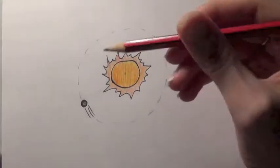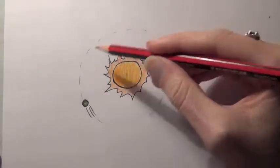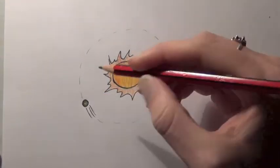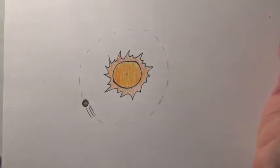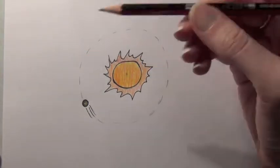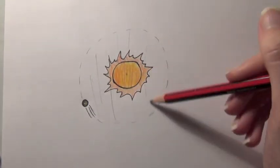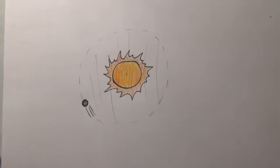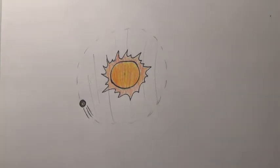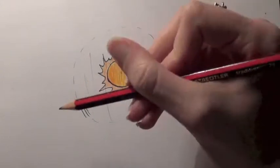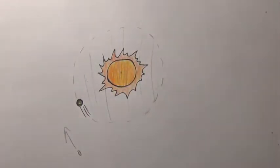The speed of an orbiting object is caused by the gravity pulling on it. Gravity is stronger when there is more mass, so the more mass there is in here, the faster this object will go. Distance also affects the strength of gravity, so an object out here will go slower because the force is weaker out there.